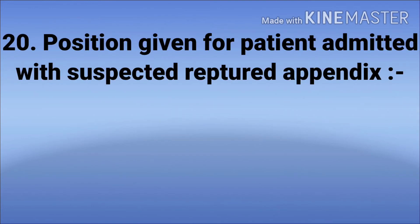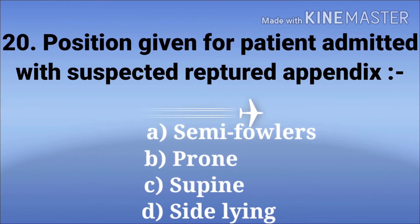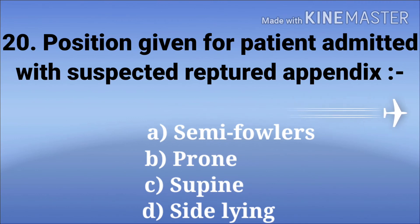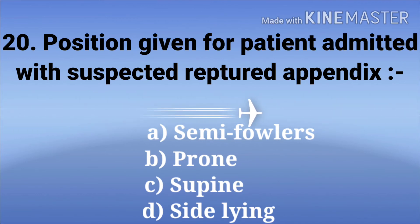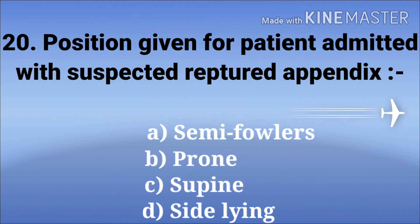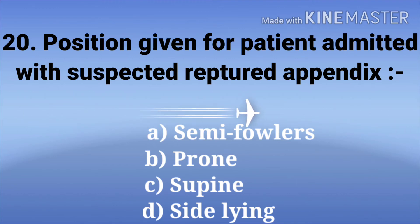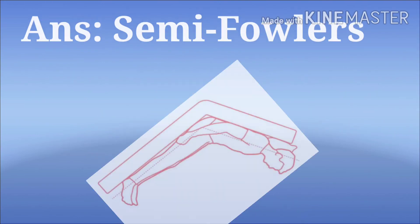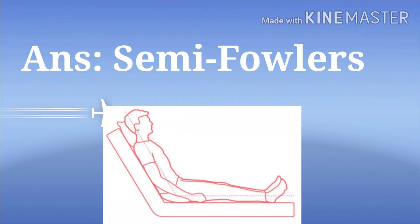Position given for a patient admitted with suspected ruptured appendix. The options are semi-Fowler's position, prone position, supine position, and lying position. The answer is semi-Fowler's position.